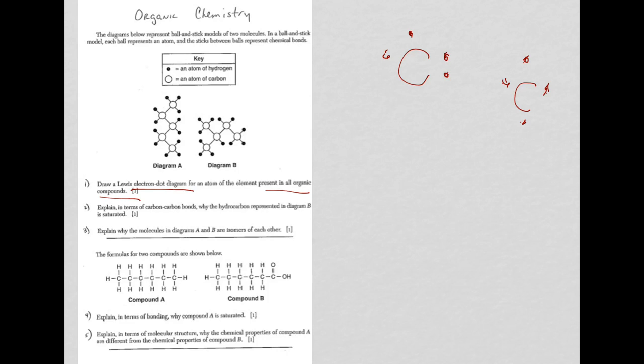Okay, let's go on to number two. It says, explain, in terms of carbon-carbon bonds, why hydrocarbon, hydrocarbon means just carbons and hydrogens, represented in diagram B, is saturated. Well, you need to know what saturated means. Saturated means all single carbon-carbon bonds, and those are your alkanes.